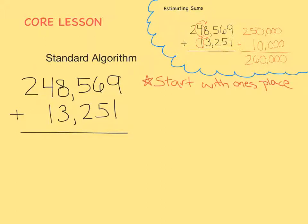We always start with the ones place. Nine ones and one one equals ten ones. We can't have two digits in one place, so we know that ten ones is the same thing as one ten and zero ones.